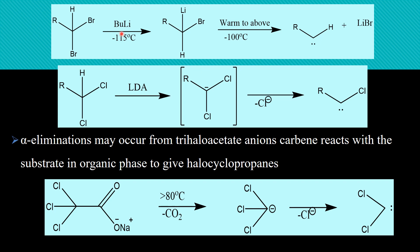In another example, when n-butyllithium reacts with a substrate, first substitution of hydrogen by lithium takes place; when heated to minus 100 degrees centigrade the reaction is very fast due to lithium. Then lithium bromide is eliminated and carbene is produced. Similarly, LDA can also produce carbene by the same method. Alpha elimination may also occur from trihaloacetate ions — for example, trichlorosodium acetate ion. When heated above 80°C, carbon dioxide is removed and a trichlorocarbanion is produced, after which one Cl leaves and dichlorocarbene is produced.